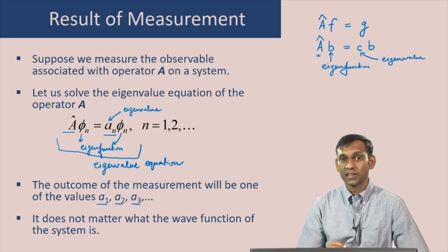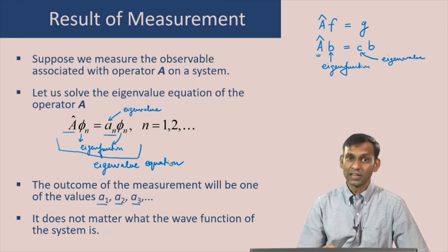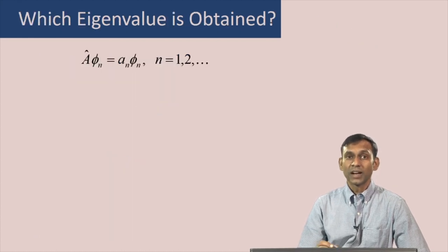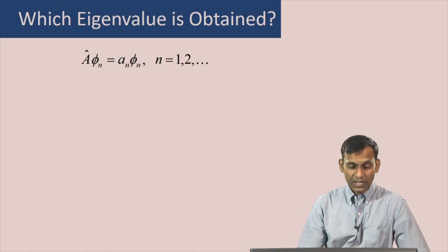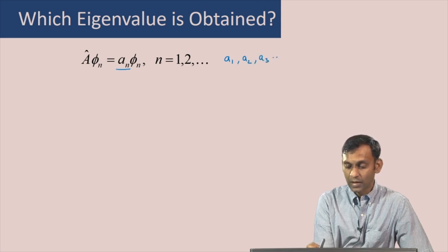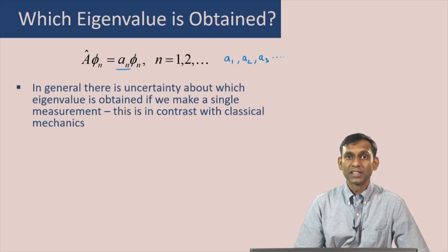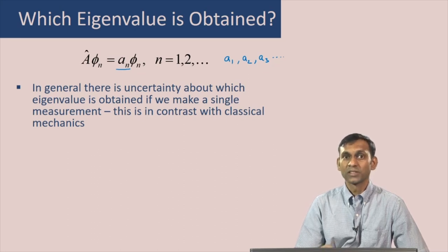The wave function contains all information about the system. In particular, it will tell us which eigenvalue is obtained when you make the measurement. The question is: which eigenvalue is actually obtained when you measure A? In general, there is uncertainty about which eigenvalue is obtained if we make a single measurement on a single quantum system.